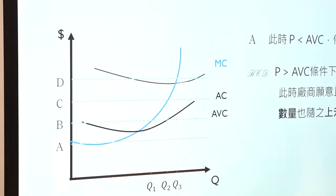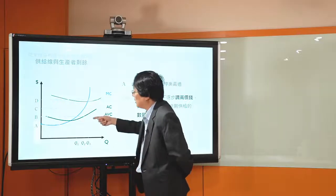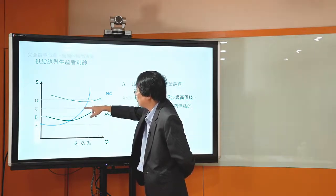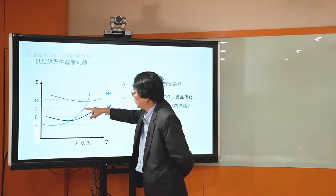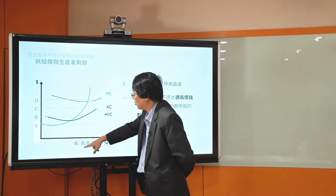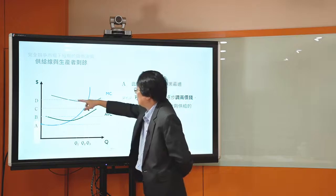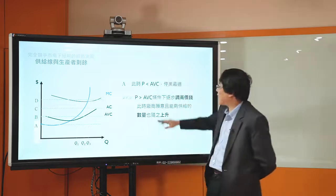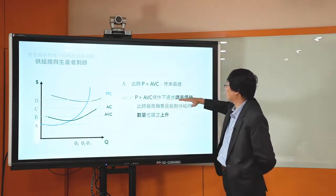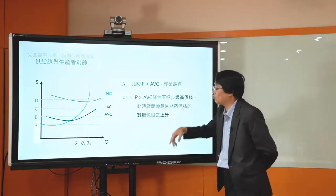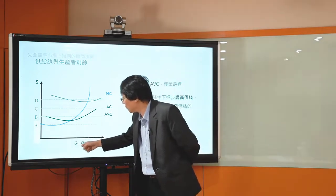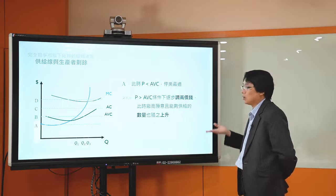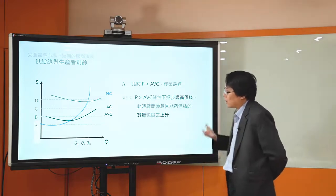當價格比AVC高的時候，廠商開始願意在市場上供應數量。當價格是B的時候，P等於MC決定Q1；當價格是C的時候決定Q2；當價格是D的時候決定Q3。雖然在某些情況下利潤是負的，但只要價格比AVC高，短期就願意供應。你可以看到，當價格逐步升高，廠商願意且能夠供給的數量也隨之上升。